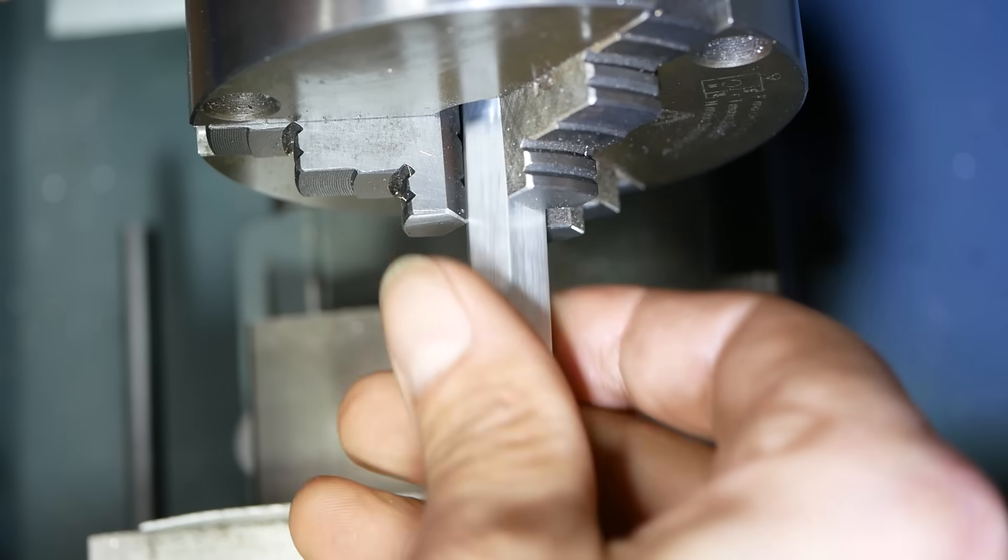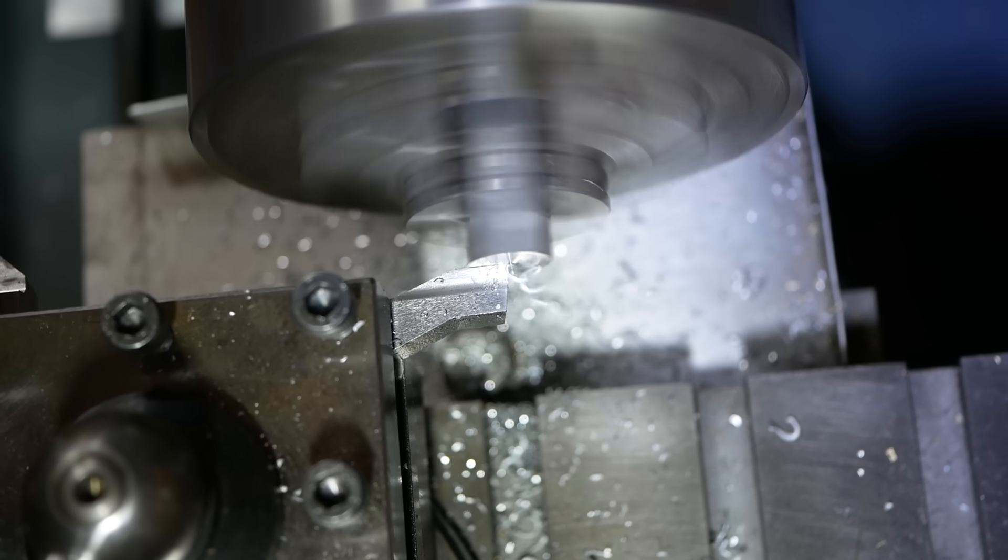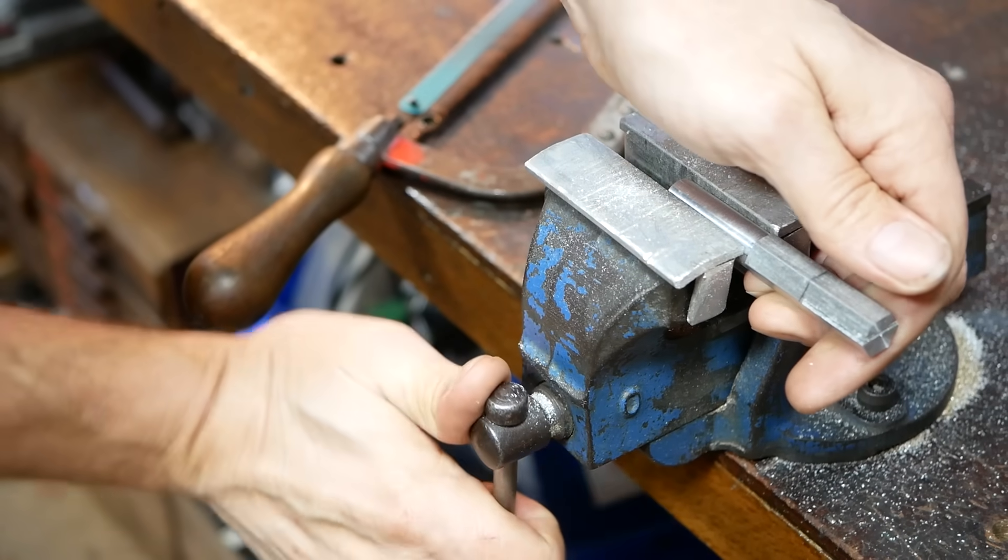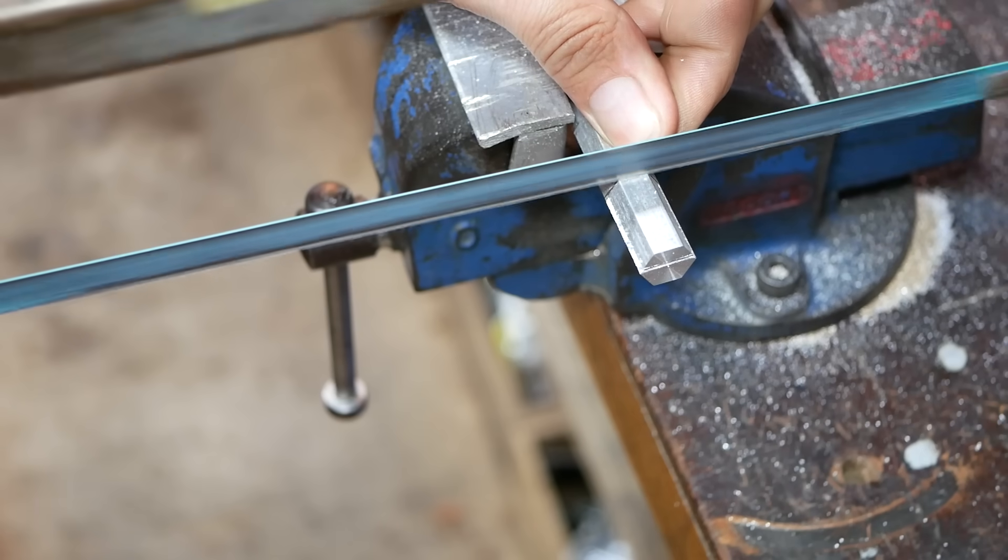The fixture is very simple. Starting with hexagonal bar, one end is turned round so it fits in a collet, and the other end is machined to accept a clamp which holds the edge for testing.